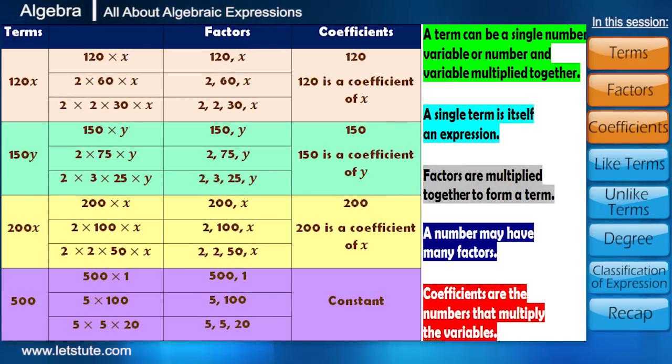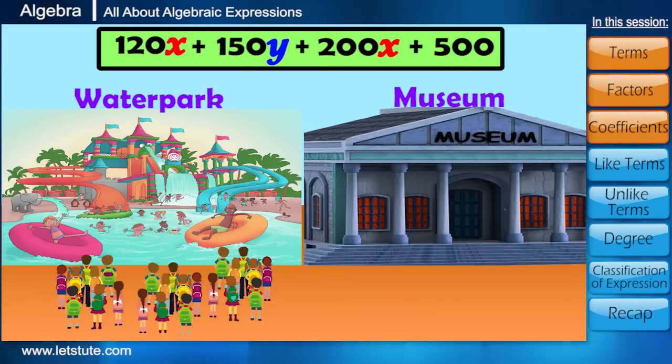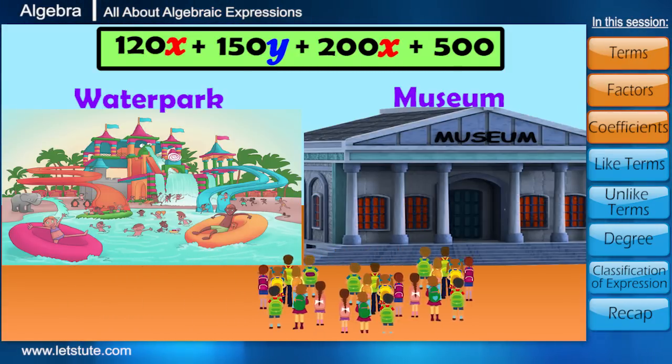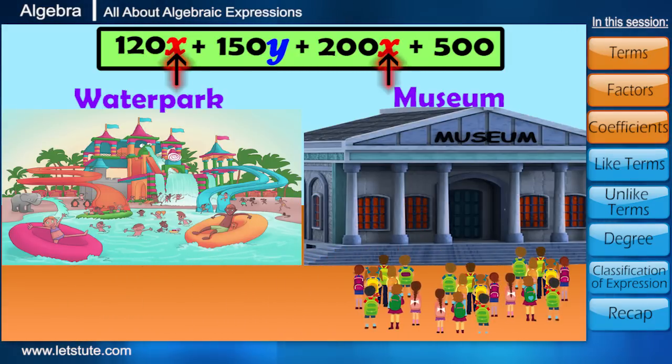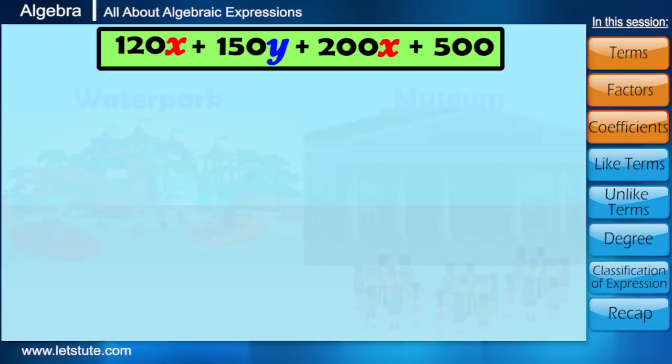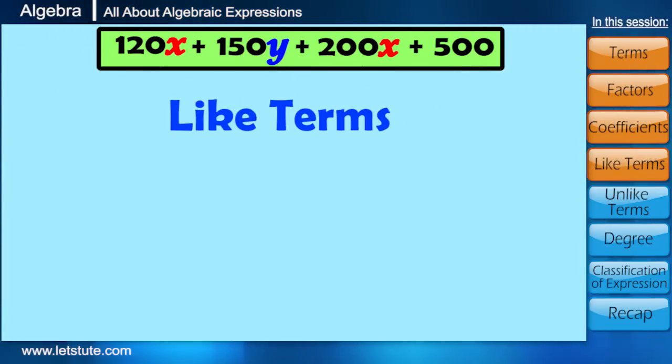Friends, if you remember, the same number of students who went to the water park visited the museum too. And so we took the same variable X to form both the terms. And such terms are called as like terms. Therefore, here 120X and 200X are called like terms.